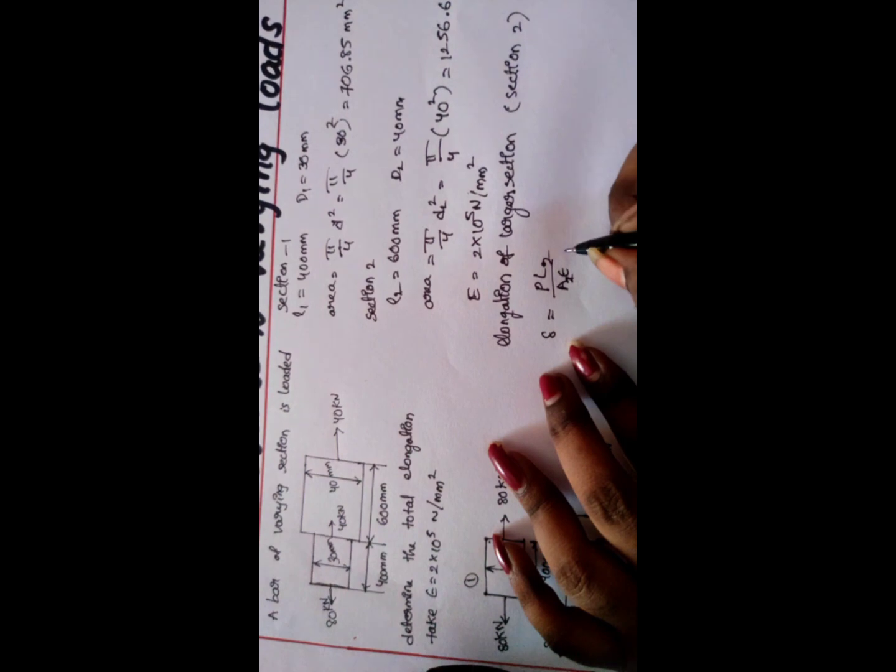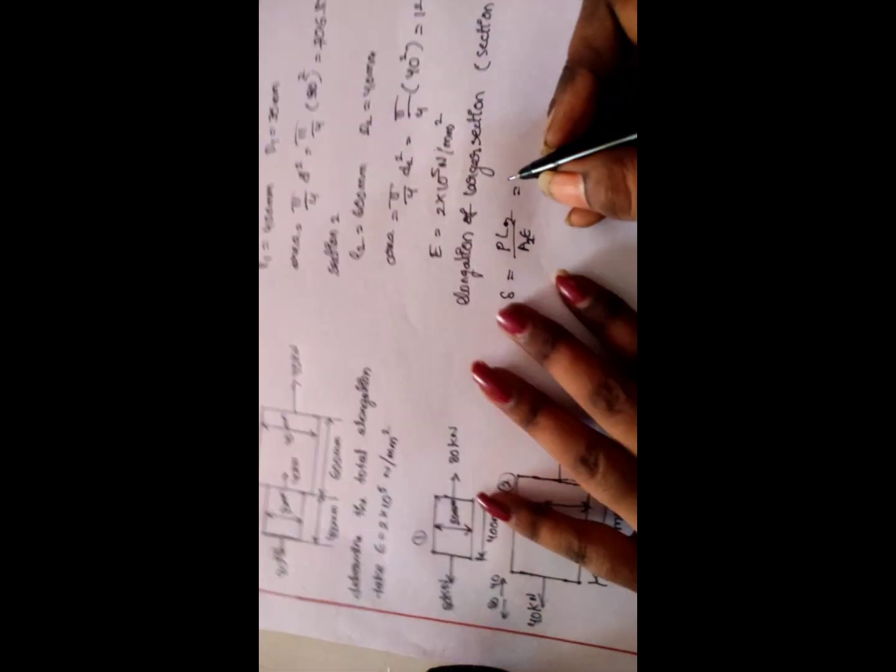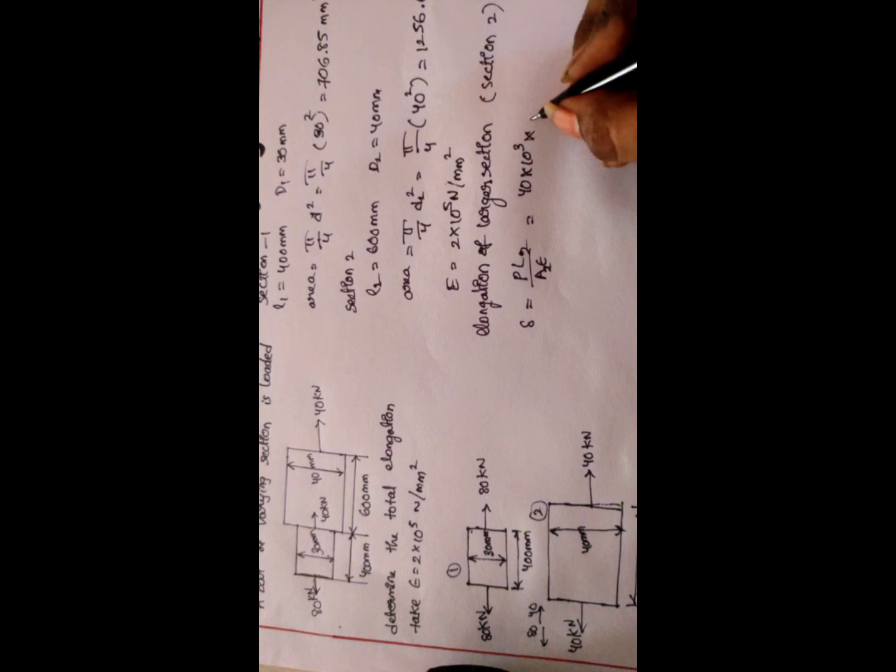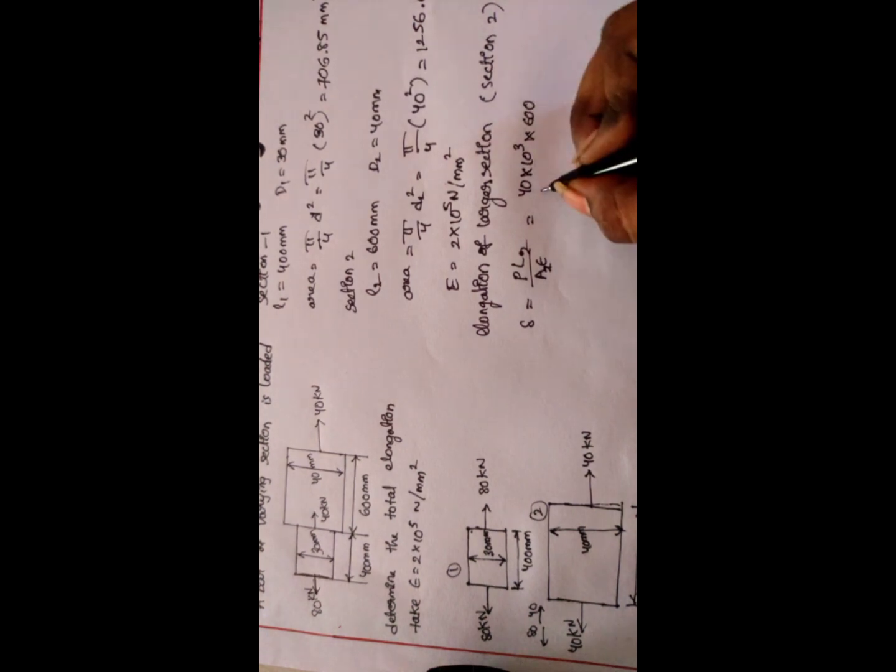At larger section, the load is 40 kN, so 40 × 10³ × L2 length 600 divided by area section 2, 1256.63 × modulus 2 × 10⁵ = 0.095 mm.